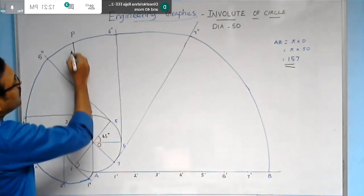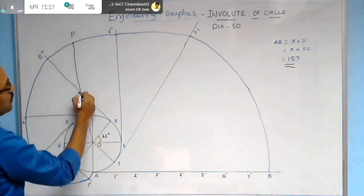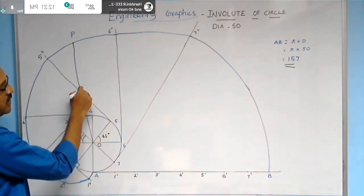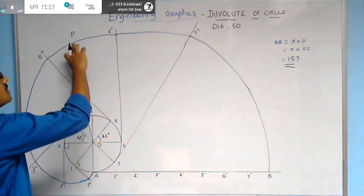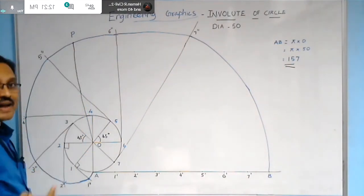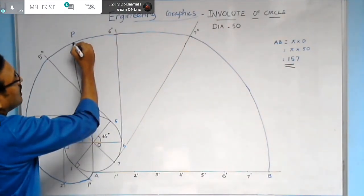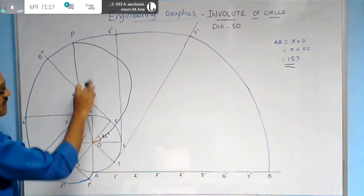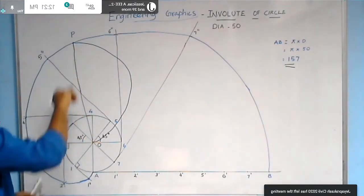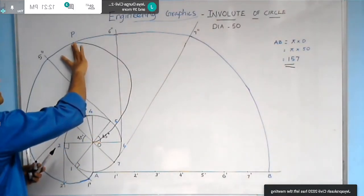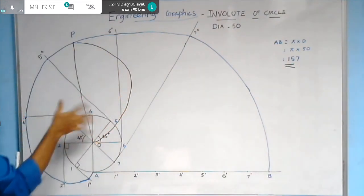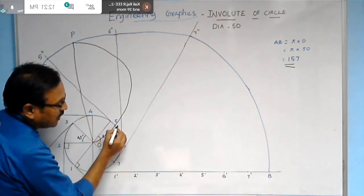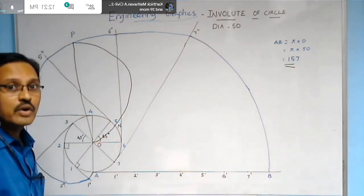Find the midpoint of OP, then with that midpoint as center and OP as diameter, construct a semicircular arc. This arc will intersect the circle at a point called N.